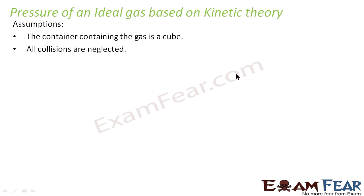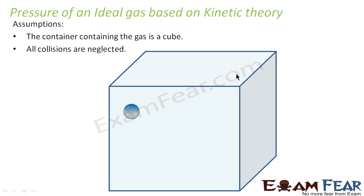We are considering a cube-shaped container which contains an ideal gas. This ideal gas consists of several molecules. To understand what we are trying to derive, let us consider one particular molecule. Let us suppose that this molecule moves, hits the wall of the container, and then bounces back.